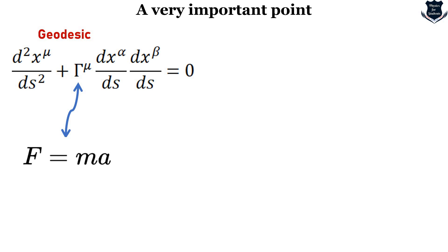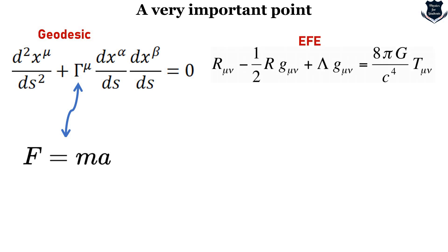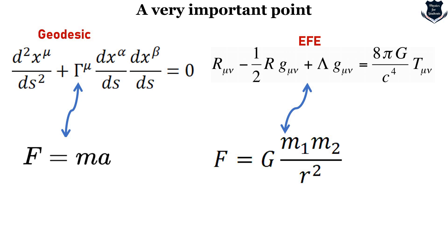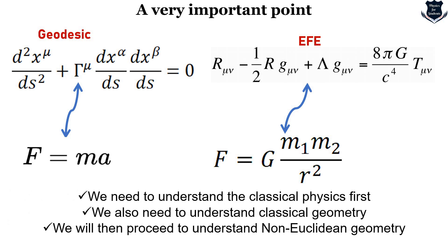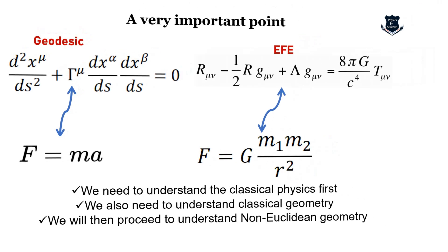The full geodesic equation reduces to F = ma. That means the geodesic movement along the curvature actually shows Newton's second law, F = ma. And the Einstein field equations, as I showed in my video on Beginner's Guide to Einstein Field Equations, again reduce to F = GM₁M₂/r² — the famous Newton's law of gravity. So from here we get the last three understandings: we need to understand classical physics first, then classical geometry, and then we proceed to non-Euclidean geometry. Classical physics, classical Euclidean geometry, then non-Euclidean geometry.